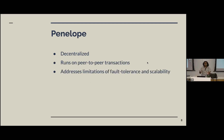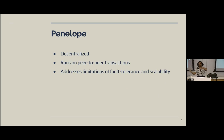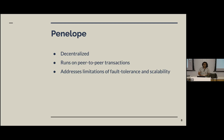Our goal with Penelope was to construct a decentralized dynamic power allocation system. Rather than relying on a central server to do coordination, we rely on peer-to-peer transactions. Rather than forcing there to be a middleman, we construct a system by which nodes communicate with each other and have power move through the system in that way. By removing a central dependency, we increase our fault tolerance and scalability, since we have no single system that needs to scale with the size of our system.